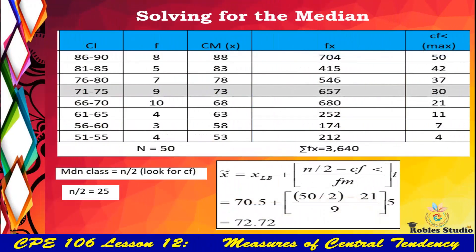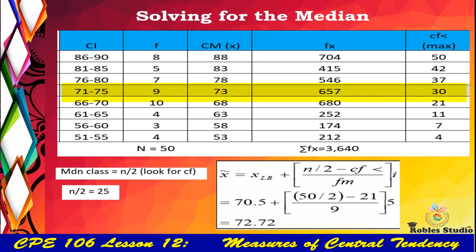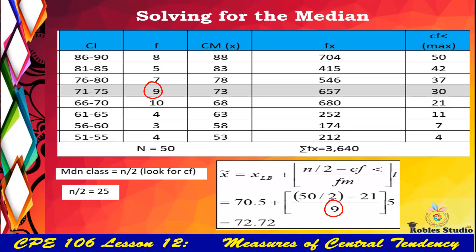To solve for the median, the first step is identifying the median class by dividing n (which is 50) by 2, giving 25. The highlighted row 71 to 75 is the median class because its cumulative frequency is 30, and our median value of 25 falls within it. The lower boundary is 70.5. Substituting into the formula: (50/2 − 21) divided by the frequency of the median class (9), multiplied by the interval 5, gives a median of 72.72.